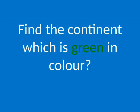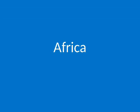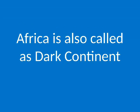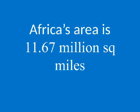Find the continent which is green in color. Africa. Africa is the second largest continent in the world. Africa is also called the Dark Continent. Africa's population is 1.21 billion. Africa's area is 11.67 million square miles.